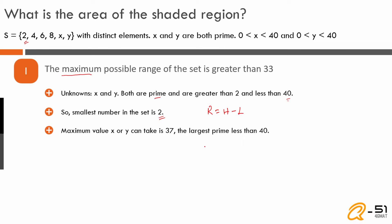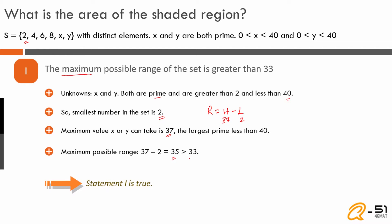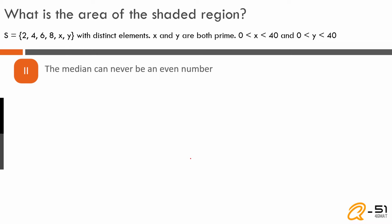The largest prime less than 40 is 37, so either x or y can take that value. With the lowest value being 2 and the highest being 37, the maximum possible range is 37 minus 2, which is 35. Is 35 greater than 33? Yes. So Statement 1 is true.